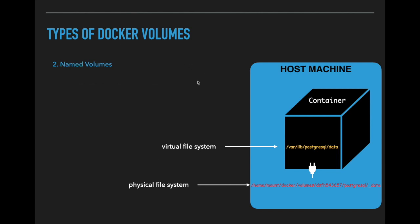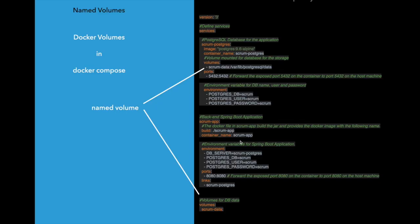The third type is named volumes, which is an improvement of anonymous volumes. We can create this using the docker run command with the option -v, giving a label as a name along with the reference of the folder in the virtual file system of the container. Among these three, named volumes is the most popular and what you should be using in production, because you don't need to create any folder in the physical file system — Docker will create it for you under the docker volumes path and plug it into the container's virtual file system.